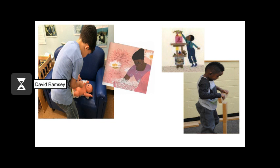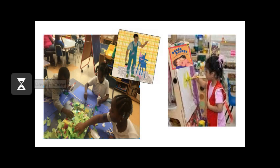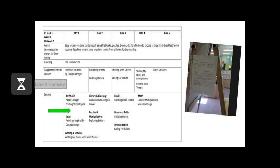The week's centers relate to these two texts — Caring for Babies in Dramatization, and Building Towers like Peter's in Blocks. In the art studio, they will create paper collages and paint at the easel, inspired by the illustrations of the core texts. What do you notice about the other centers for the week and how they relate to the core read-alouds?